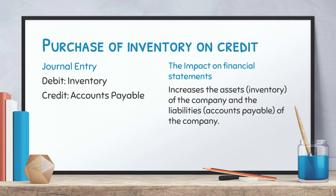As a result, we credit accounts payable to record the increase in the company's liabilities. On the other hand, we debit inventory to record the increase in the company's assets. This means that the company has more inventory available to sell to its customers.